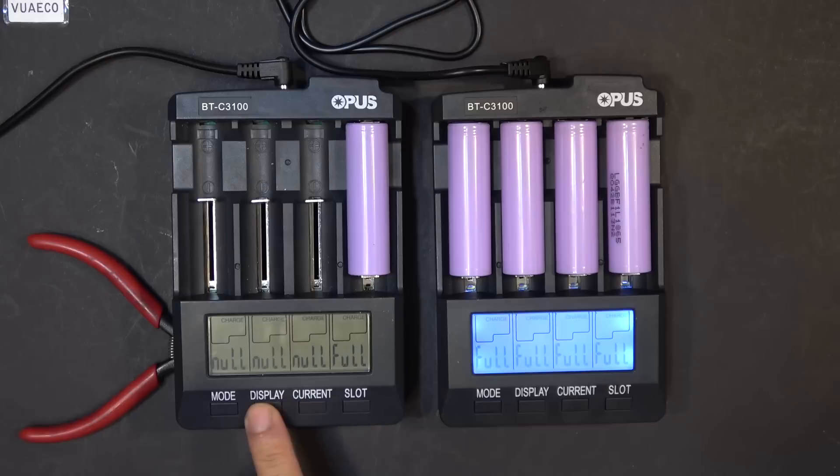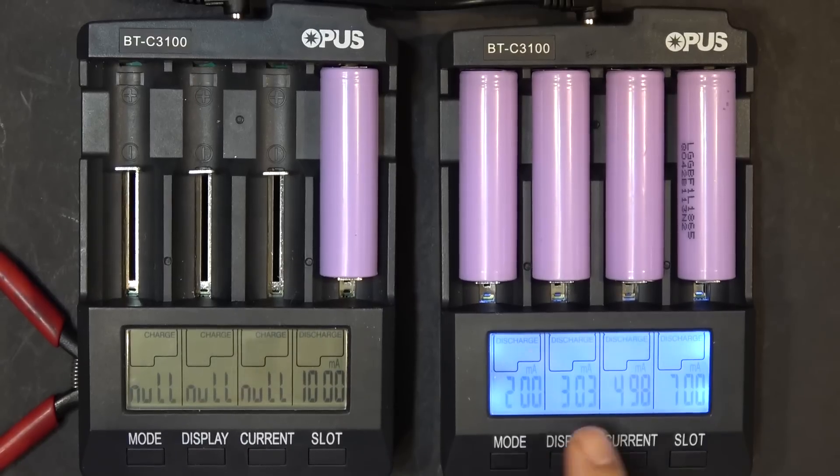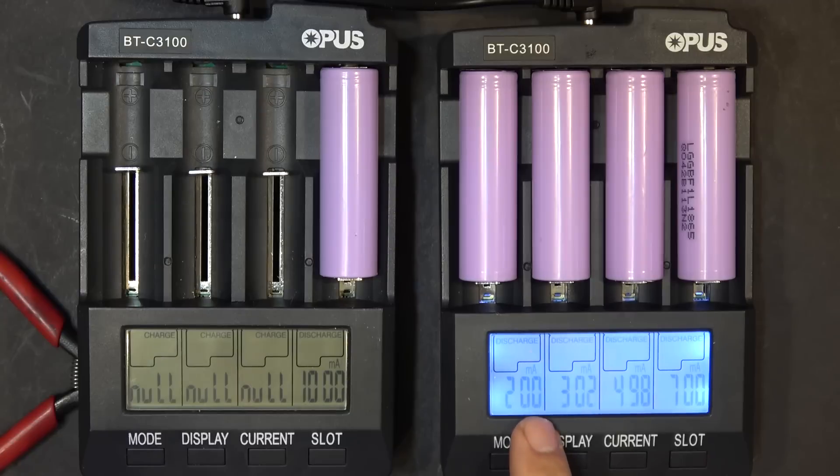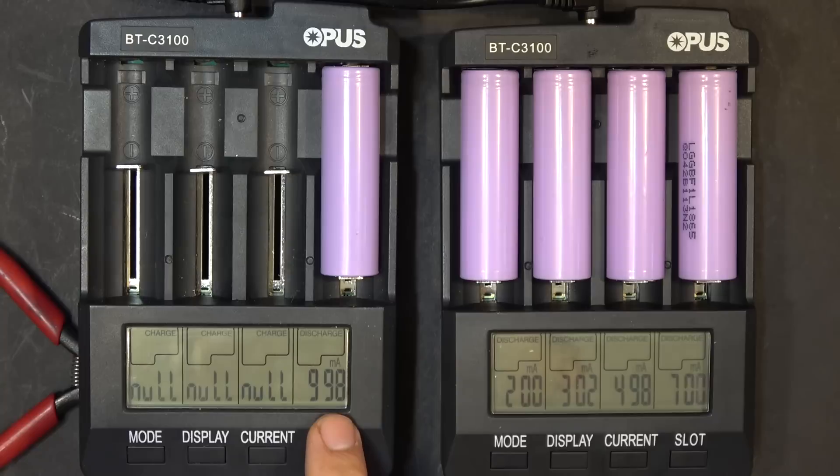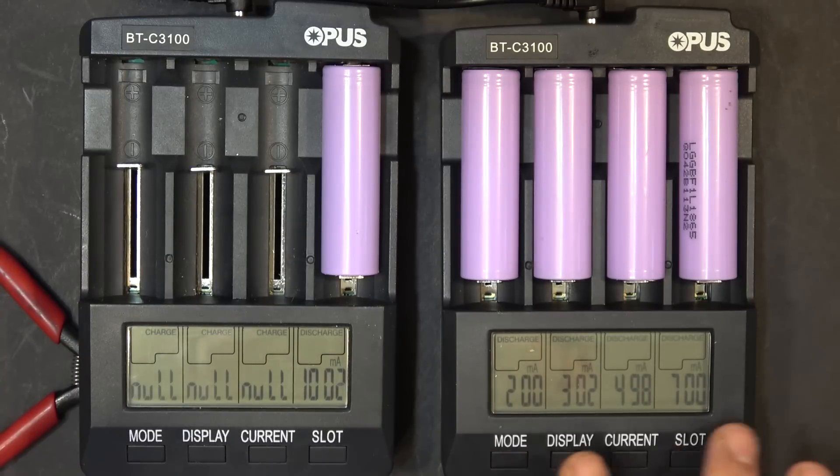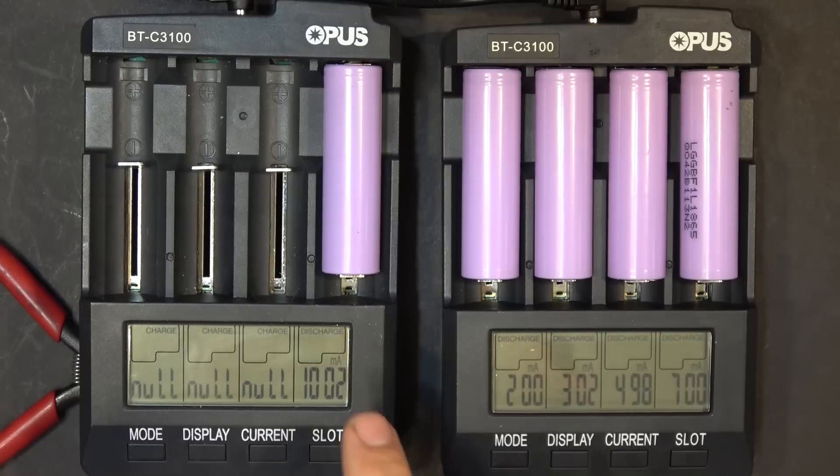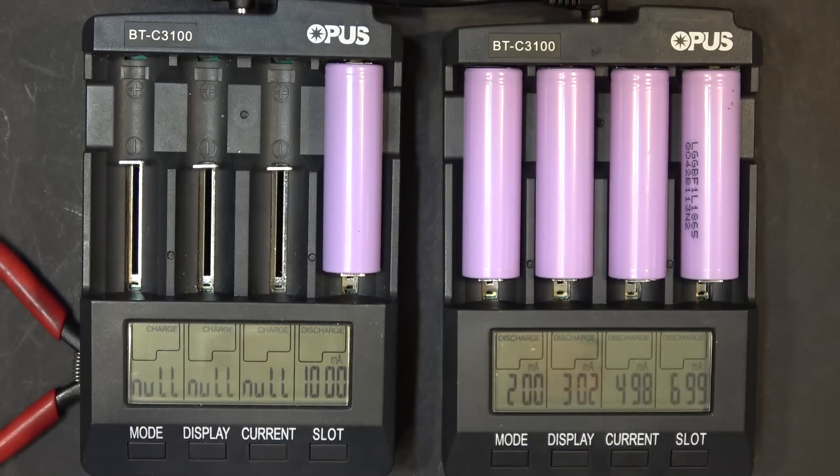Now it's time to let them discharge. We've got 200 mAh, 300, 500, and 700 on this charger, and over here we've got discharge of 1000 mAh. So these are the 5 options that I can get from this charger for discharging these 18650 cells.